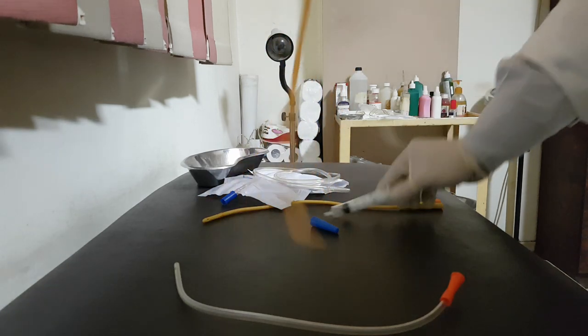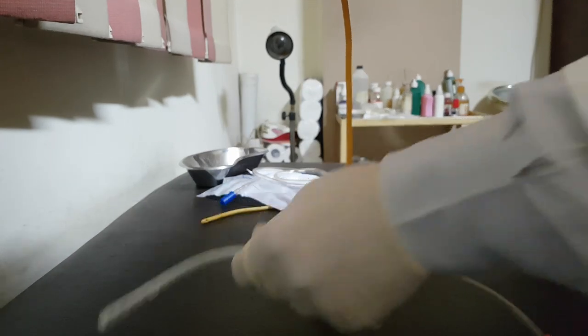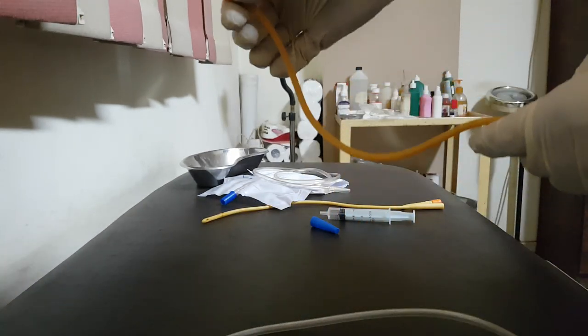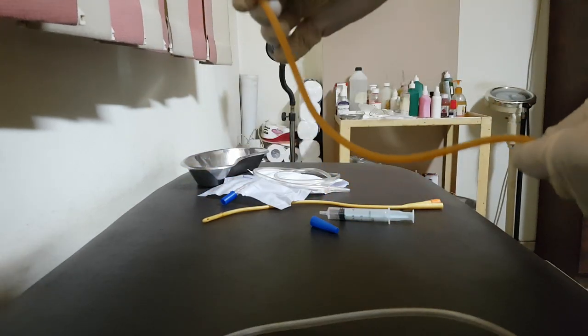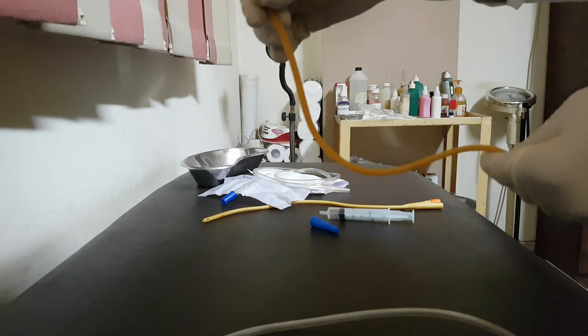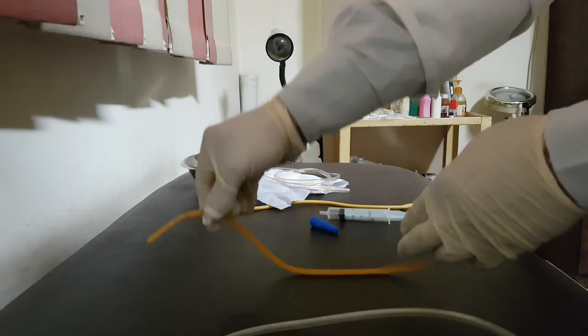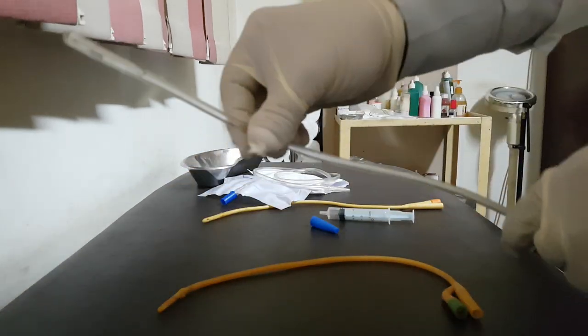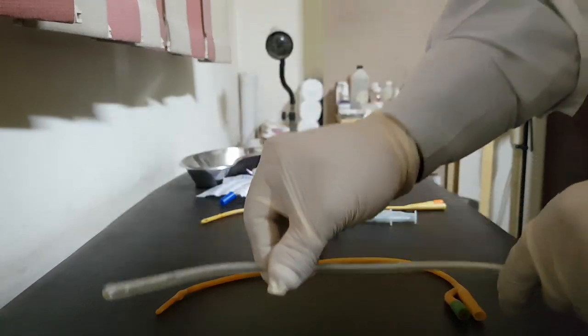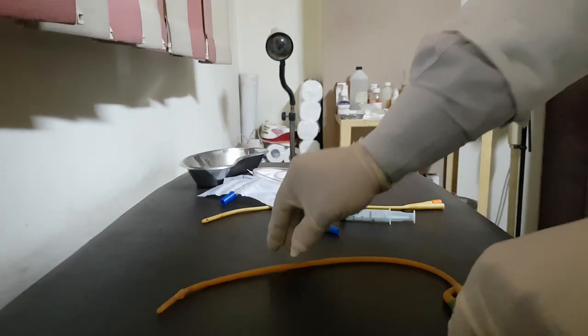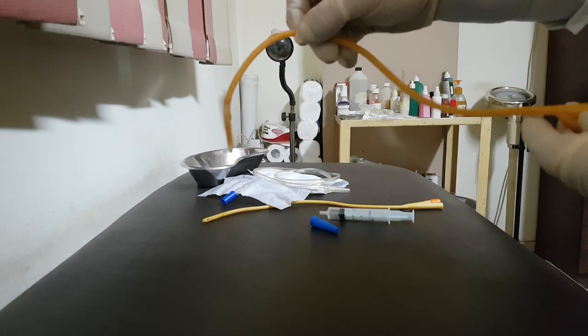So Foley catheter is different than Nelaton in having this balloon. Why this balloon? To keep the catheter inside the bladder for longer time. So we call it indwelling catheter. It can be used for days, weeks, and so on. While Nelaton catheter is used only at the same moment to evacuate the bladder then remove it. So it is not fixed in place. But Foley catheter is fixed through this balloon.